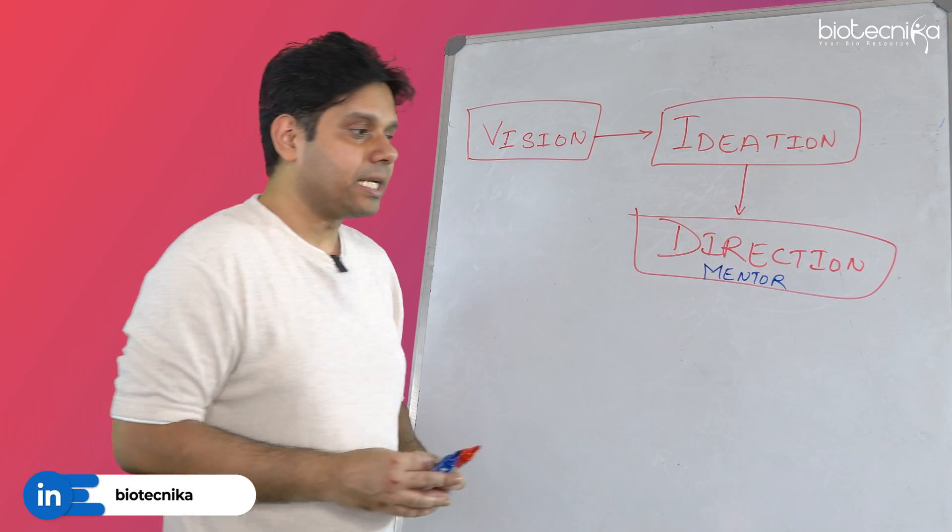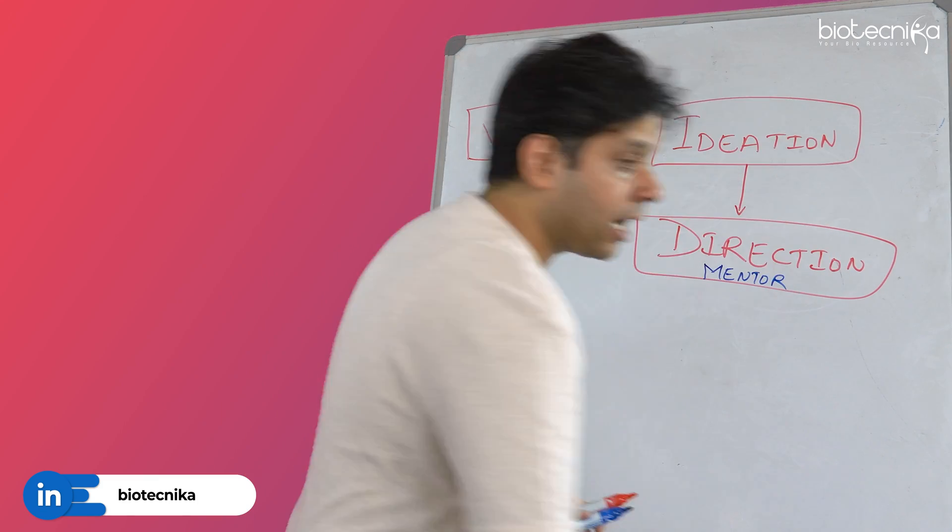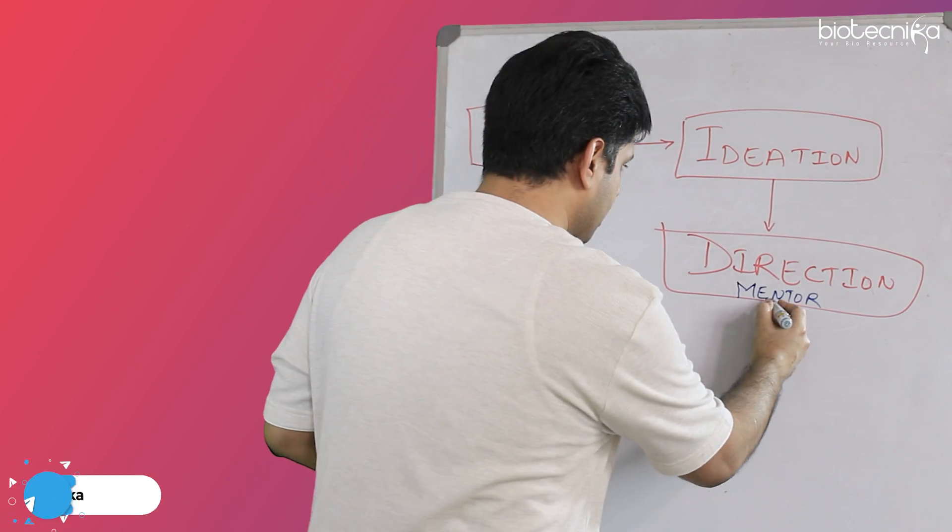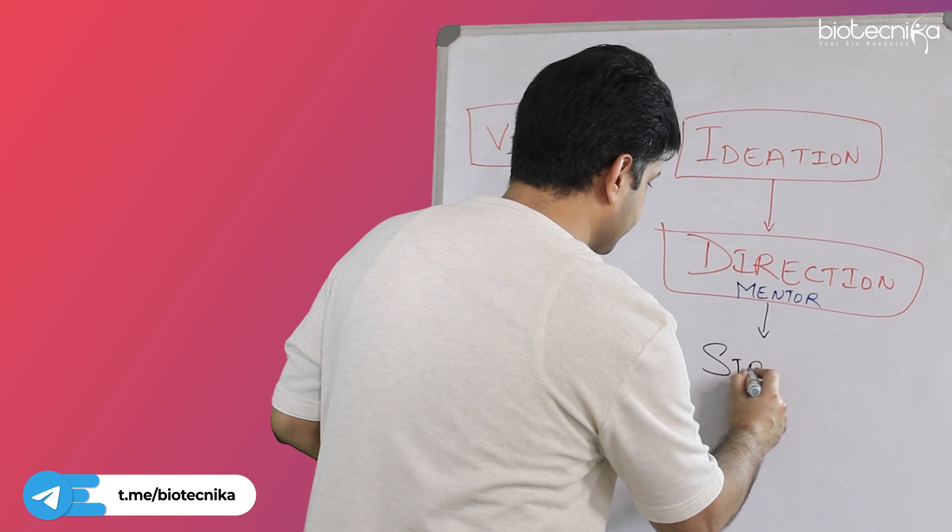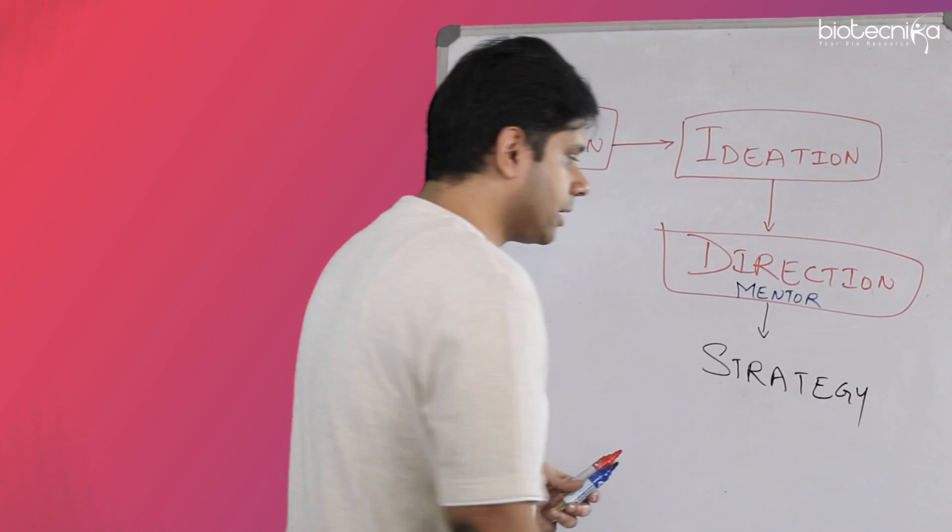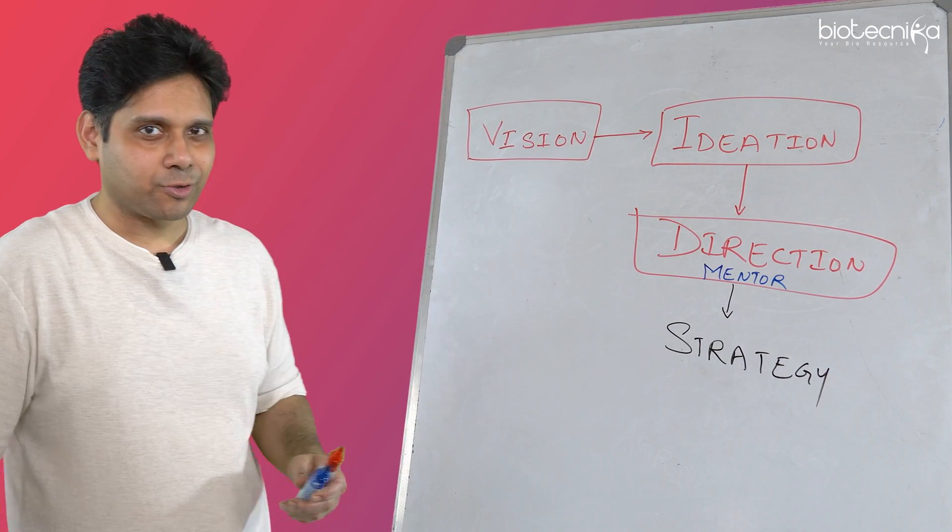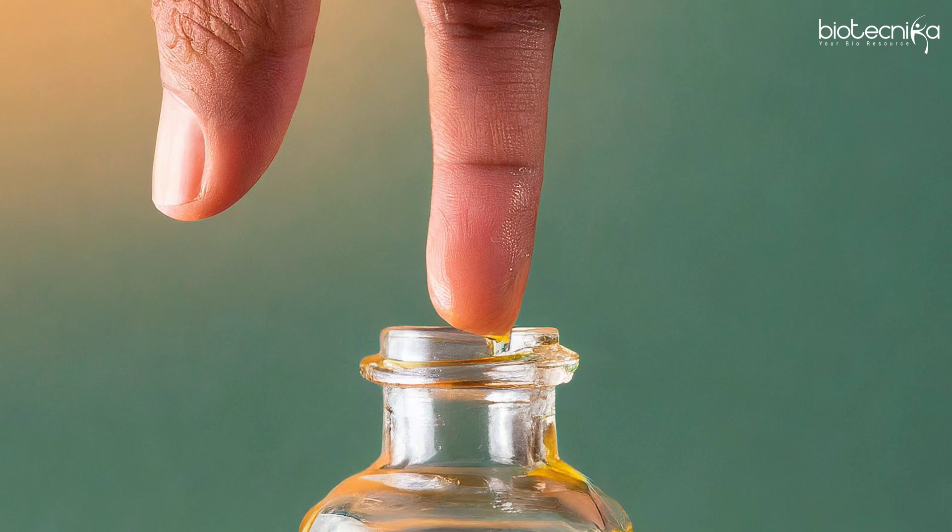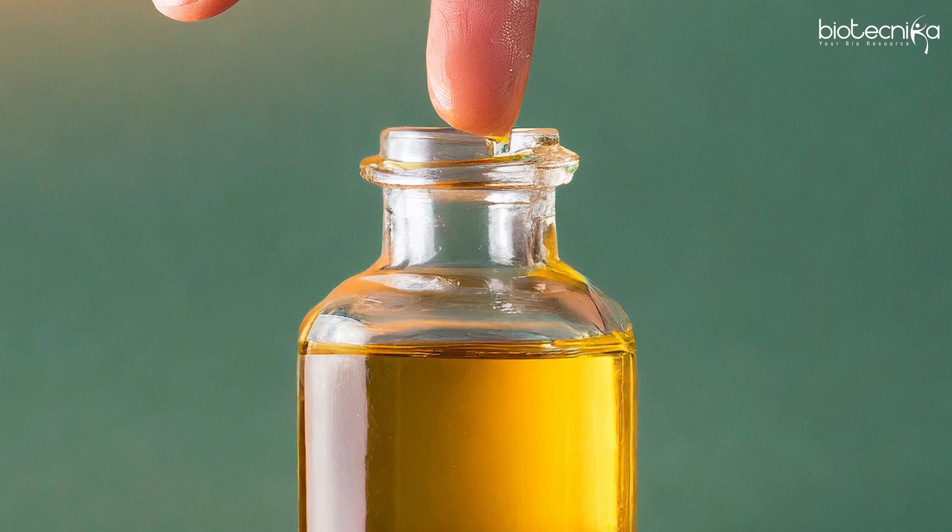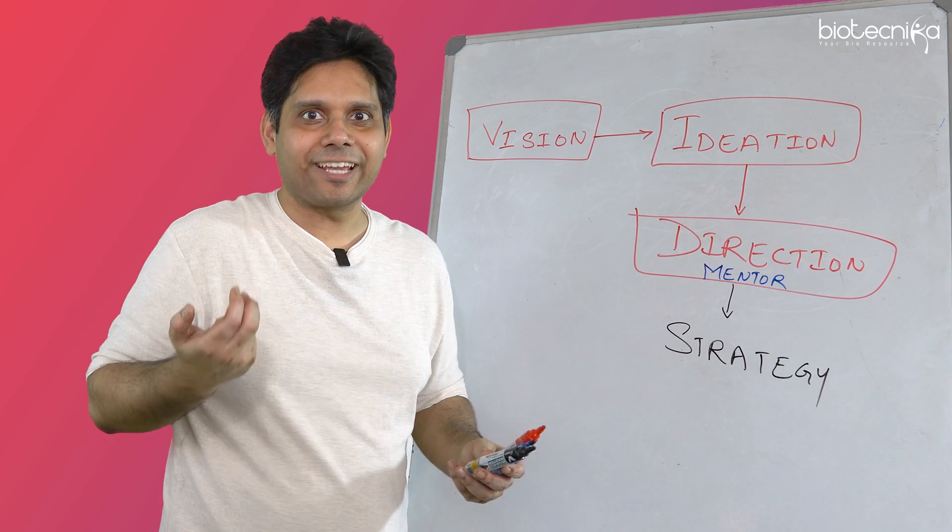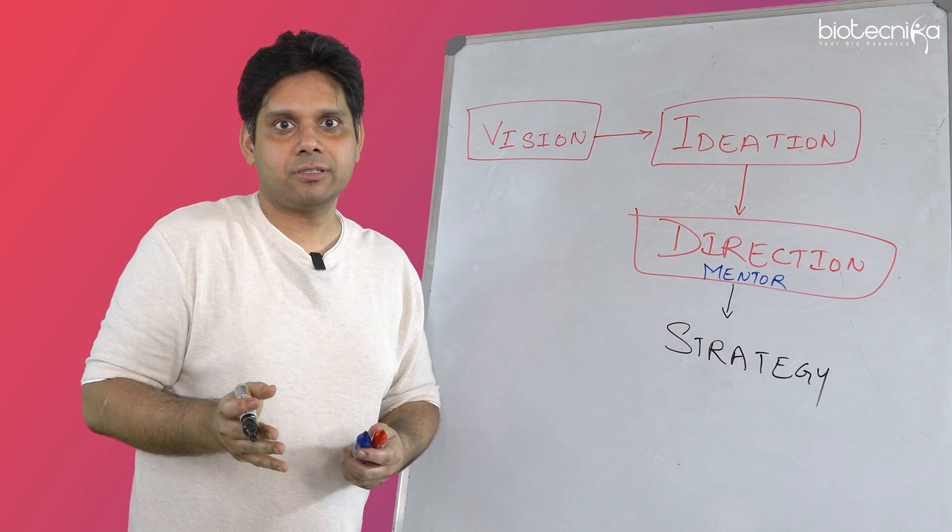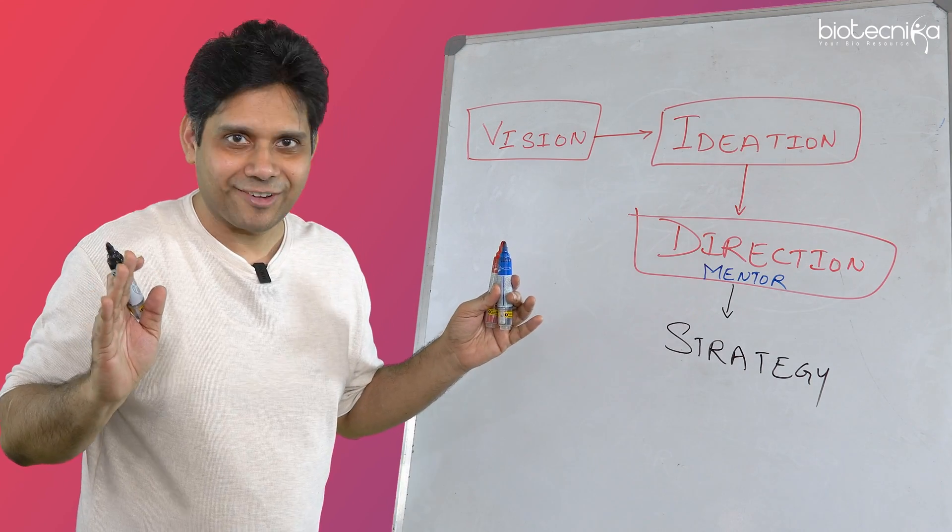So, now you have the direction. Next, what do we need? We will need now strategy. So, now that I know, okay, what is my direction, next we will need strategy. Now, why strategy? That's something you have to know. If your fingers are straight, can you take ghee out of the bottle? You cannot, right? You have to make it curve, right? Then only you can take it. What is it? That is strategy. You need a strategy, right? If you don't have the right strategy, then you will be gone.